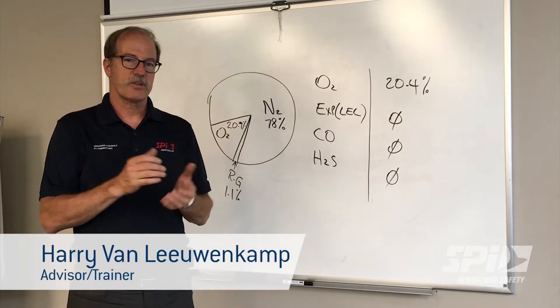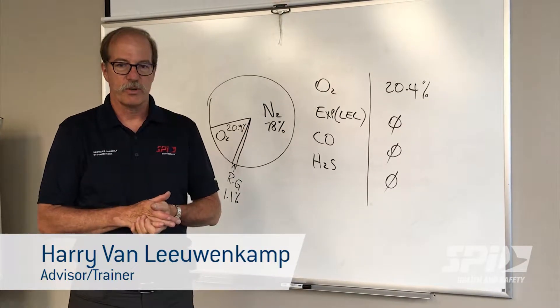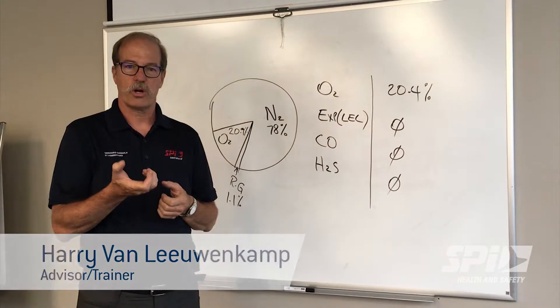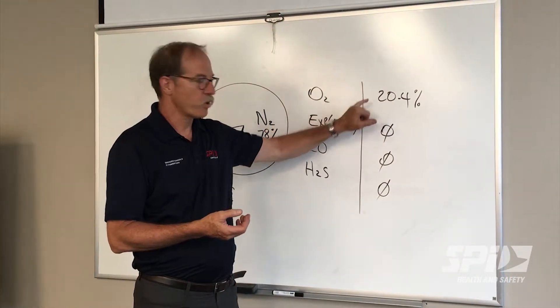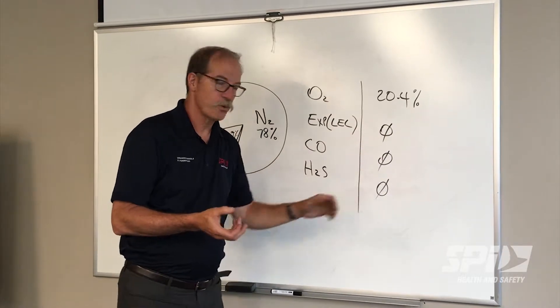When working in a confined space and doing gas detection, we want to make sure that the air quality is good. Now what happens when we get a reading for oxygen of 20.4% and 000 for the other ones?